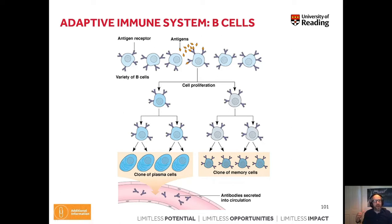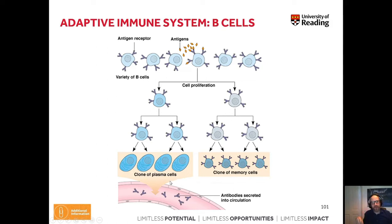Afterwards, those cells undergo differentiation — they specialize — followed by multiple rounds of proliferation. This proliferation leads to a clonal expansion of the cells. As a result, we end up with clones of plasma cells that actively produce antibodies against the specific antigens the naive B cell encountered before, and also formation of memory cells that can be reactivated if the antigen is sensed by the immune system at a later time.